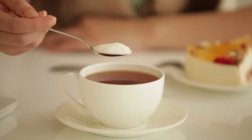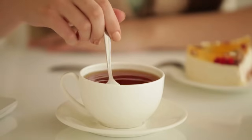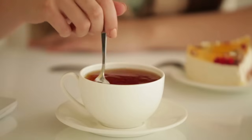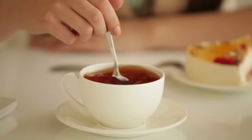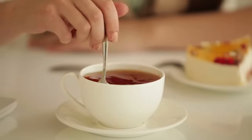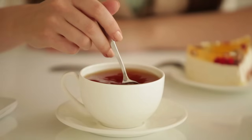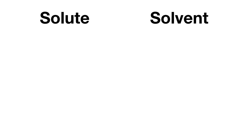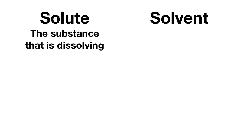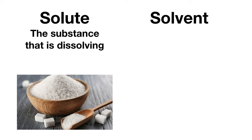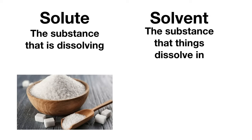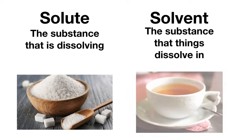Here is a spoonful of sugar being added to a cup of tea. What does this represent? This would represent a solution, because the sugar and tea will become evenly mixed together — every sip will be just as sweet as any other sip. Now in this solution, what is the solute and what is the solvent? The solute is the substance that's dissolving, which was the sugar. The solvent is the substance that things dissolve in, which here was the tea.